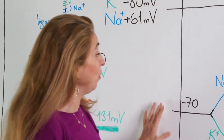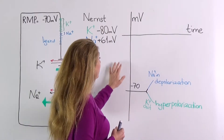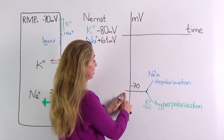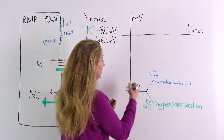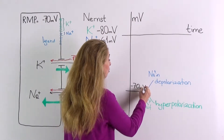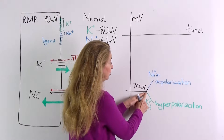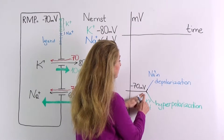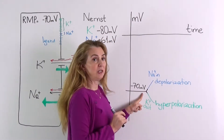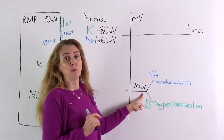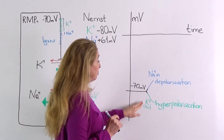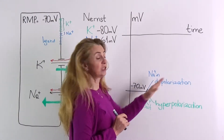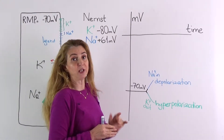We can examine all these effects on a recording of the membrane potential. The membrane potential starts at the resting level, which is minus 70 mV. If potassium channels open, potassium moves out and the cell hyperpolarizes. If sodium channels open, sodium moves in and the cell depolarizes.